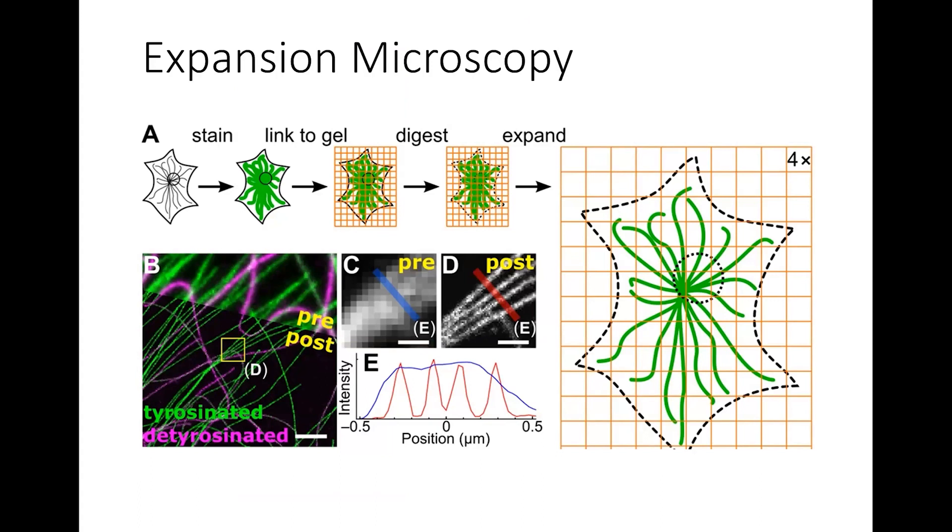This is from the first paper of pro-expansion microscopy for protein retention. You're going to stain, then use the Acrylyl-X to link the sample to the gel, digest out the proteins. And at that point, you can expand the sample approximately four times. And what does this do for resolution? We're effectively moving those lines apart. In C and D, you can look at a bundle of microtubules before expansion, and then those same microtubules after expansion. If you look at E, you can see the intensity plot with blue being pre-expansion. You can't definitively say how many microtubules are there, but after expansion in the red, you can see that there's four distinct peaks.